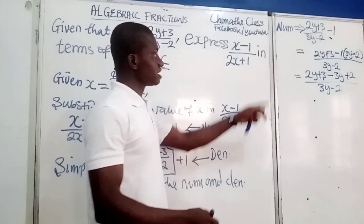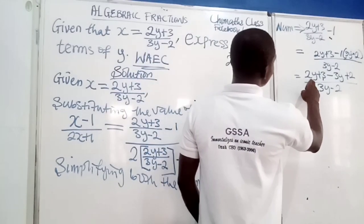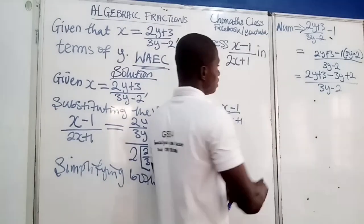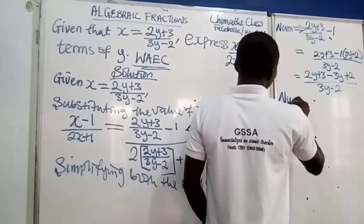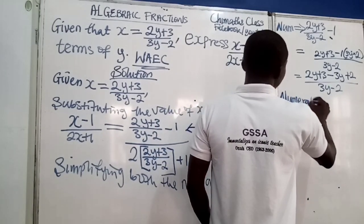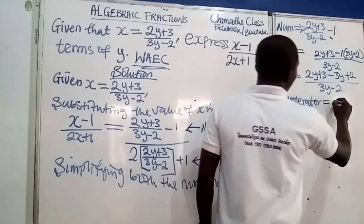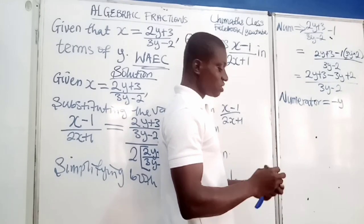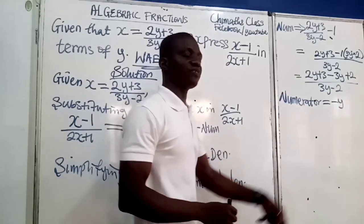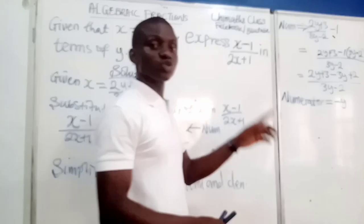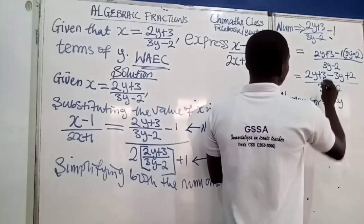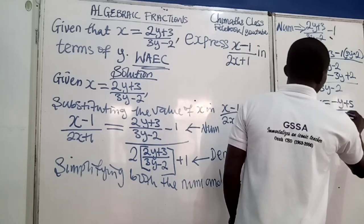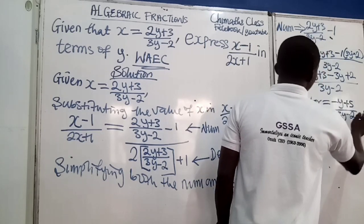Good. Can we collect like terms? Yes. We have 2y minus 3y, and then 3 plus 2. So the numerator equals 2y minus 3y, which gives minus y — because 2 minus 3 is minus 1, so we write minus 1y, plus 3 plus 2 equals plus 5. All divided by 3y minus 2. This is the numerator.